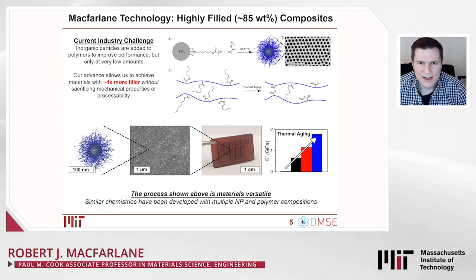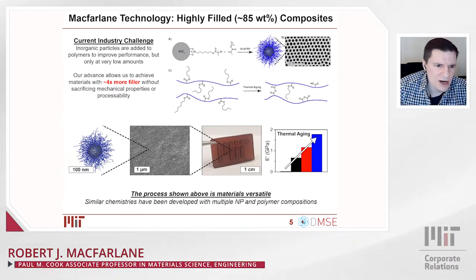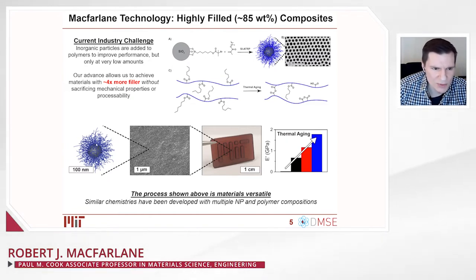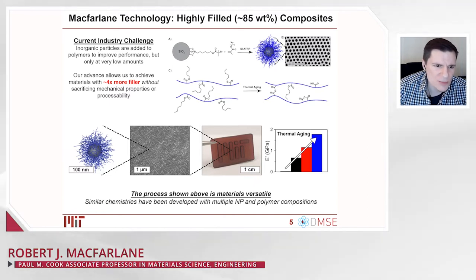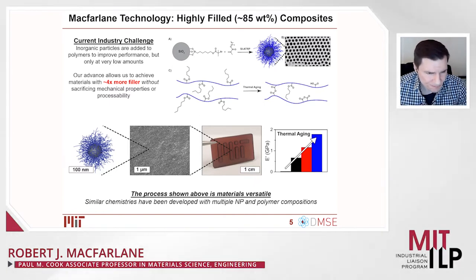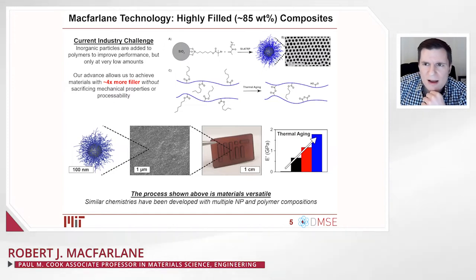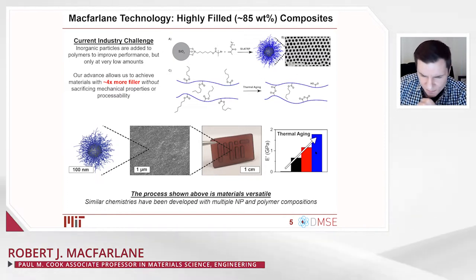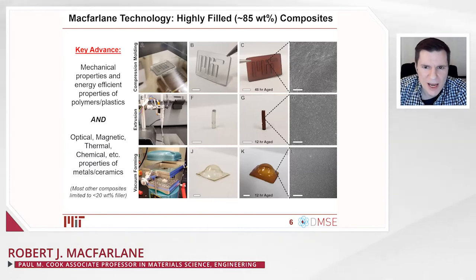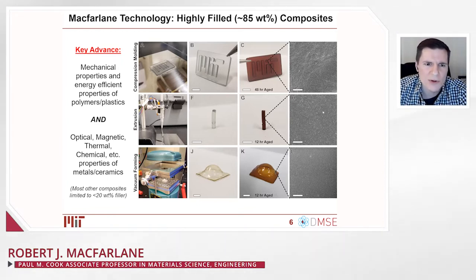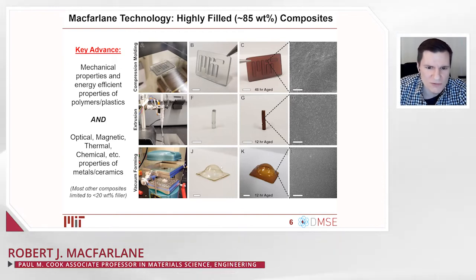Our lab has tackled this challenge using brush particles — nanoparticles coated with polymers where one end of the polymer chain is attached to the particle — allowing us to use these particles as single-component building blocks for polymer composites. The specific advance is a method to cross-link these particles together once processed into a macroscopic form, then chemically cross-link them, going from a very soft material to a very rigid and stiff material with a simple heating process. Examples of macroscopic materials we've made are compatible with compression molding, extrusion, vacuum forming, and other methods.